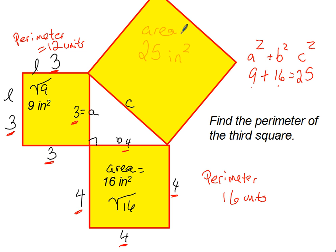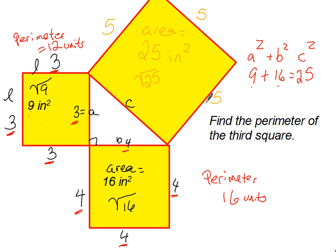Since I know now that the area is 25 inches squared, I need to find out the length of each side. We're going to do the same thing we did for the first two squares — take the square root of the number to find the length of each side. The square root of 25 is 5, so each side of this square is 5 units.